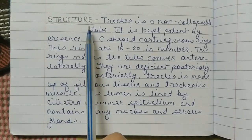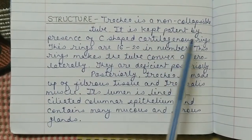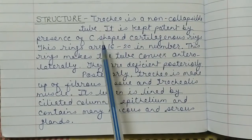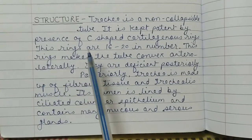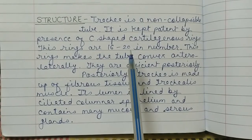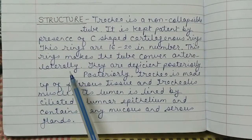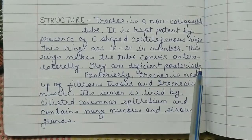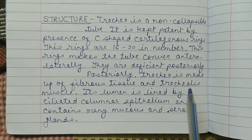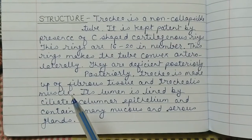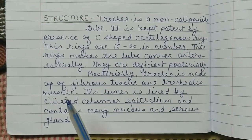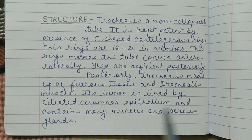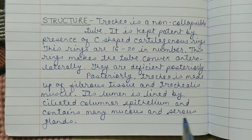Trachea is a non-collapsible tube, kept patent by the presence of C-shaped cartilaginous rings. These rings are 16 to 20 in number. They make the tube convex anterolaterally and are deficient posteriorly. Posteriorly, trachea is made up of fibrous tissue and trachealis muscle. Its lumen is lined by ciliated columnar epithelium and contains many mucus and serous glands.